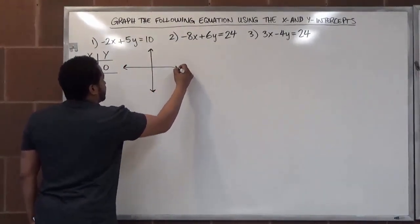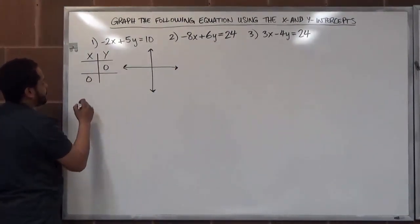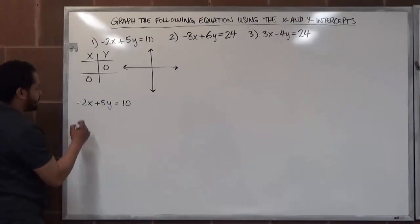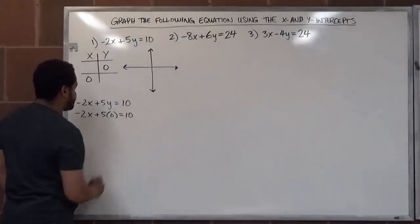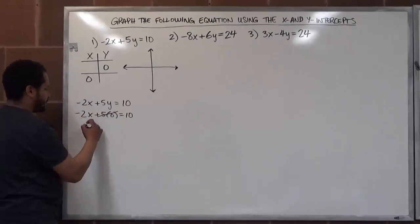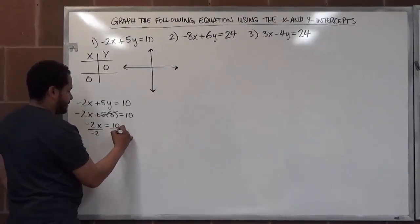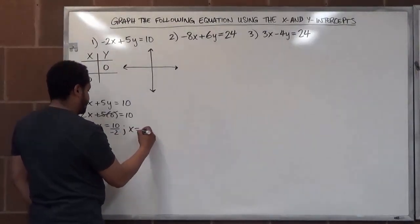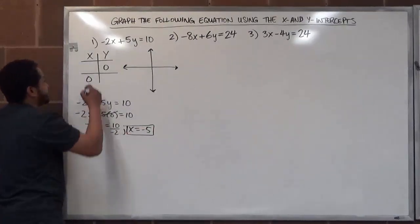We'll do the work directly under this. To begin, we're substituting zero for y. We have negative two x plus five y equals ten, and we're substituting zero for y. This cancels out the five, so we're left with negative two x equals ten. We solve for x by dividing both terms by the coefficient of x, which gives us x equals negative five.